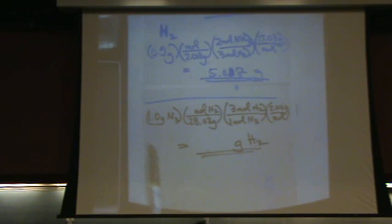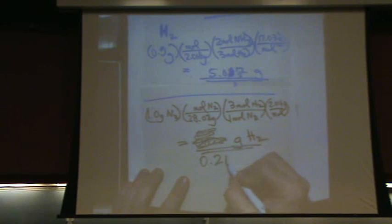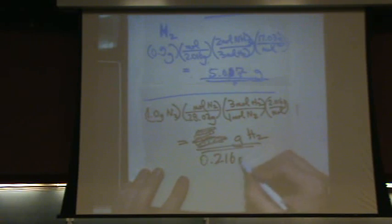So now I have mass of hydrogen. So know what I did. I started with mass of nitrogen and went to mass of hydrogen, just doing a stoichiometry problem. This is going to be the actual mass. Does anybody have this? It was 0.216, 0.216 grams.